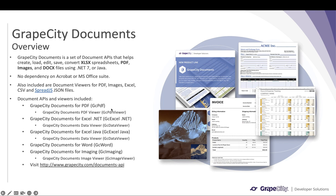Document APIs and viewers included in GrapeCity Documents include GrapeCity Documents for PDF, or GC PDF — this is our PDF API that helps to work with PDF documents. Also included within this package is GrapeCity Documents PDF Viewer, or GC PDF Viewer, a JavaScript-based viewer that helps to view PDF files in your web applications.